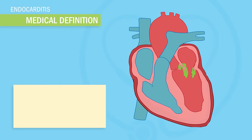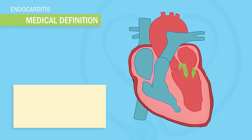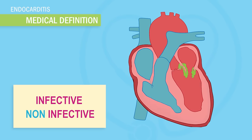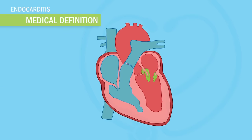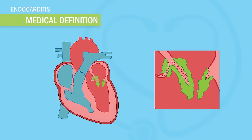We have two types of endocarditis, both infective and non-infective. Infective means it's caused by bacteria or fungi, and non-infective means it's not caused by bacteria or fungi. Whatever the cause, the inflammation is more common on the left side of the heart, where the aortic and mitral valve are — aka the bicuspid valve.